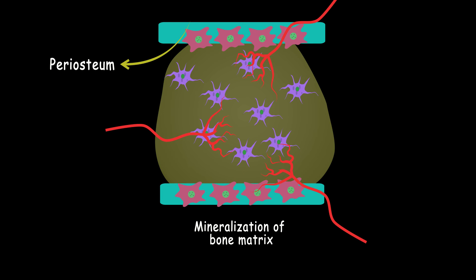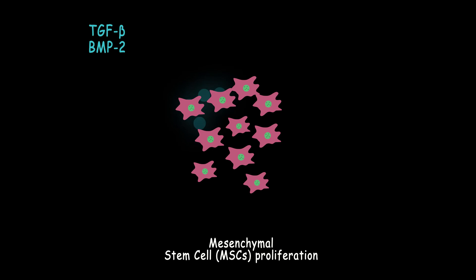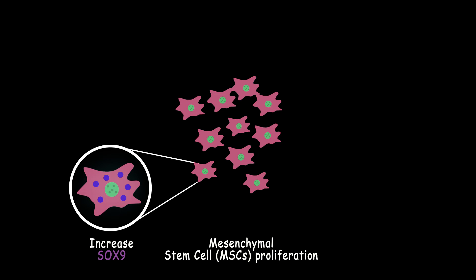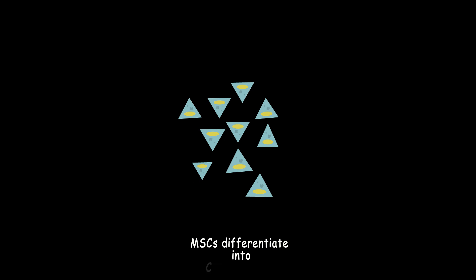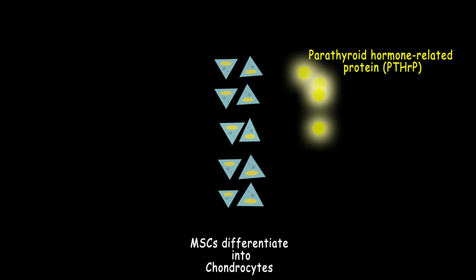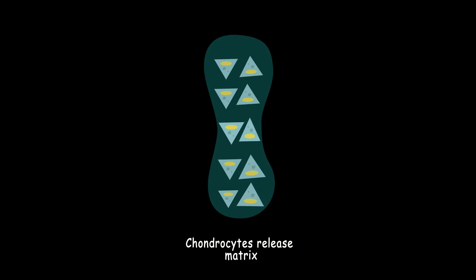Endochondral ossification starts with two signaling factors called TGF-beta and bone morphogenic proteins-2 which stimulate mesenchymal stem cells to express SOX-9. Expressing this factor makes the mesenchymal stem cells differentiate into chondrocytes. Then, the parathyroid hormone-related protein stimulates the chondrocyte to secrete a matrix consisting of collagen type 2.